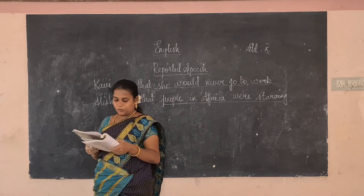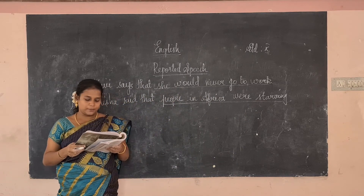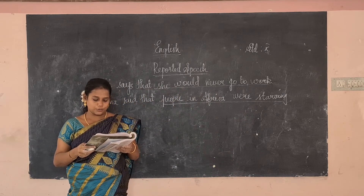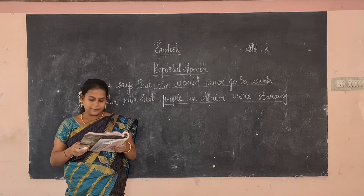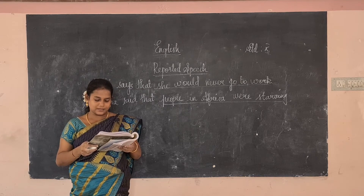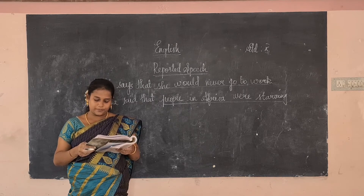With modal verbs — would, might, could, should, ought to, used to — the verb remains the same. For example: 'I might go.' Shalini said that she might go. 'I would try it.' Vinod said that he would try it.